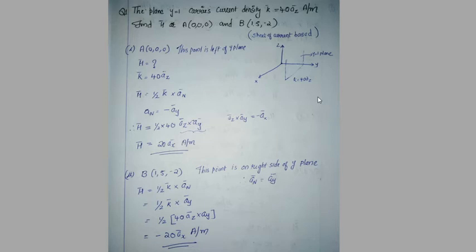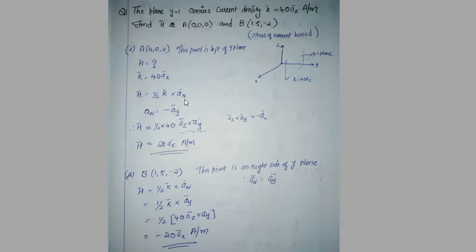Now, the magnetic field intensity H is equal to half K cross an. For point A, which is on the left side of the y equal to 1 plane, the normal vector an is minus ay cap. We substitute K equal to 40az cap and an equal to minus ay.